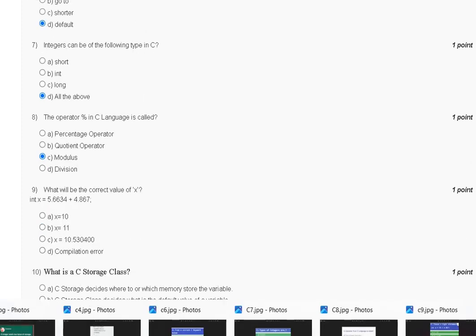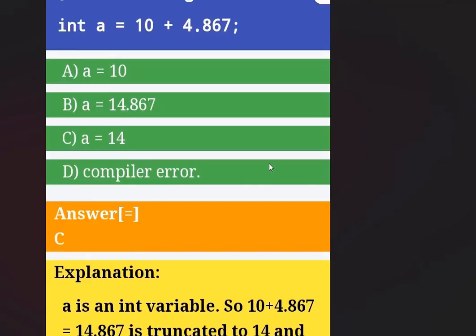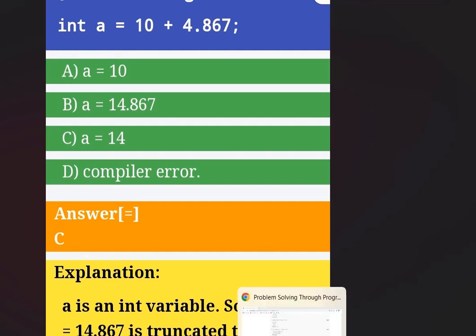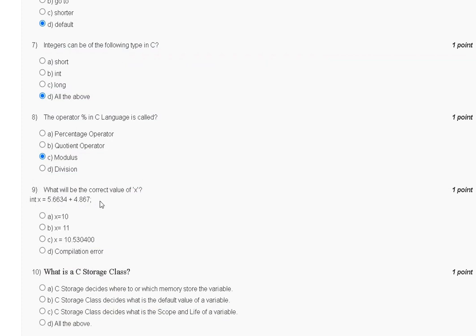Question 9: what will be the correct value of x if int x equals 5.6634 plus 4.867? Since x is declared as int, the values are truncated. 5.6634 truncates to 5 and 4.867 truncates to 4, giving 10. Alternatively, 5.6634 plus 4.867 equals 10.5304, which truncates to 10. Hence the correct answer is x equal to 10.